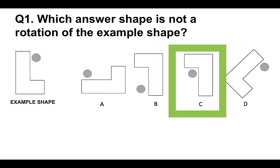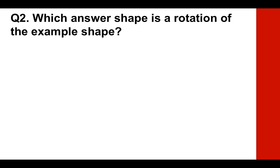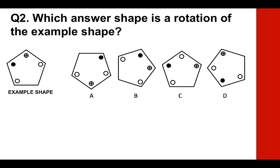Now you guys have a go at question number two. Please put your answer to question two in the comments section below the video for marking, and I'll come on here each day and mark them for you. There's a timer on the right-hand side — that bar is your timer. You have 12 seconds to answer this next question. It's quite tough. Which answer shape is a rotation of the example shape? Is it A, B, C or D?